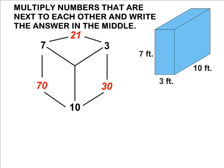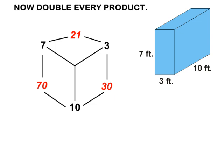After you have figured out what the products are of the numbers that are next to each other, take those three values and double them. 21 doubled is 42, 30 doubled is 60, and 70 doubled is 140.